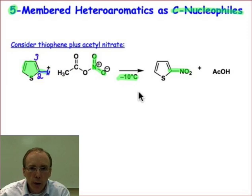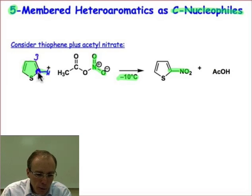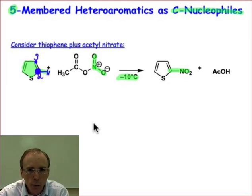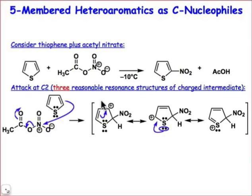There are a couple of ways we can understand why substitution takes place at C2 rather than C3. One is to do a Hückel (Schmo) calculation and look at the highest occupied molecular orbital — the greatest coefficient of the HOMO is on C2. Another way is to compare the intermediates that form by attack at C2 versus C3. C2 attack involves three resonance contributors, whereas C3 attack only involves two.